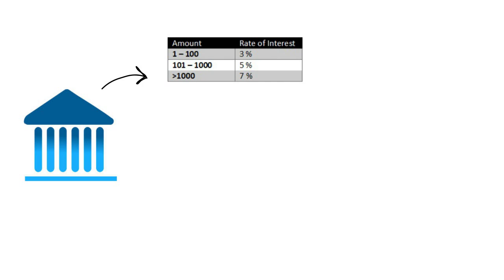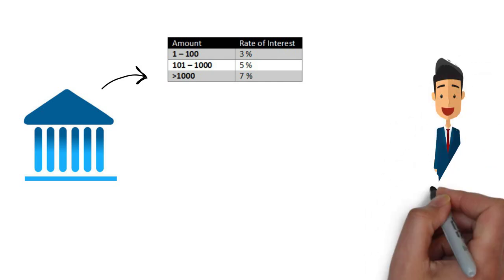One of the validations is to check that the interest rate applied by the system is based on the amount the customer puts in their account. For example, if the customer is opening an FD for five hundred dollars, the applicable interest rate should be five percent — the system should automatically pick this five percent. If you are not applying the test technique here, you would end up testing the system for all applicable amounts starting from one to greater than one thousand dollars.